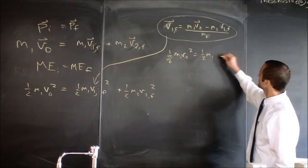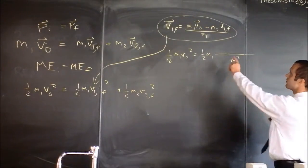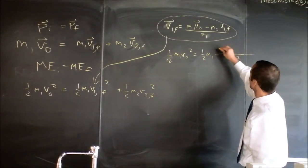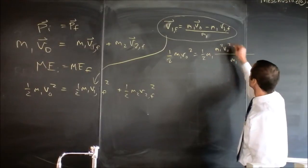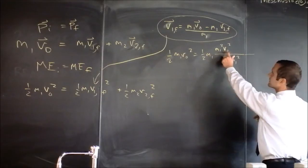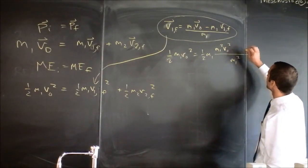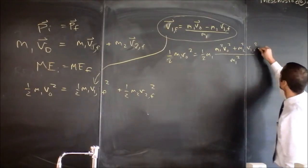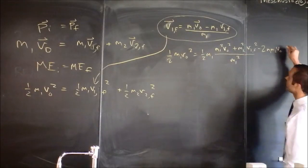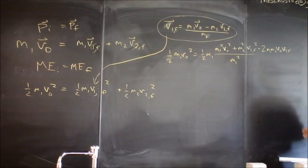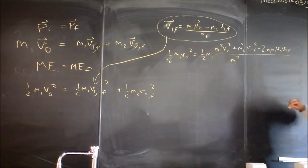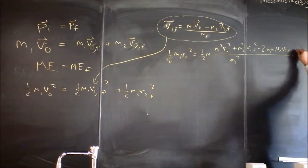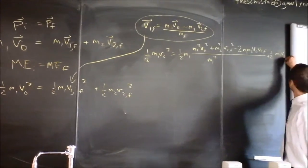Now I take this and I plug it in and I get one-half M1 times V0 squared equals one-half M1 times... So now I've got this and I'm going to plug it in, but I have to square it. So let's look at the denominator first, the denominator is M1 squared and the numerator is going to be this term squared plus that term squared minus two times the product of those guys. So we'll say M1 squared V0 squared. We don't need to have a vector hat anymore on this because we're squaring it. And then we'll add on M2 squared times V2 final squared and then we're going to subtract two times M1 times M2 times V0 times V2 final.